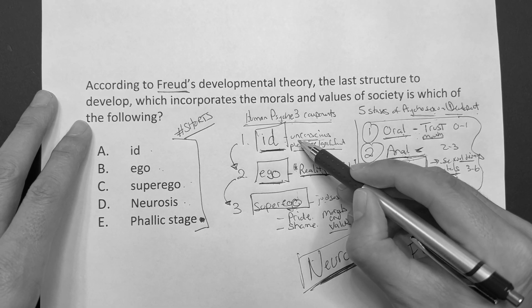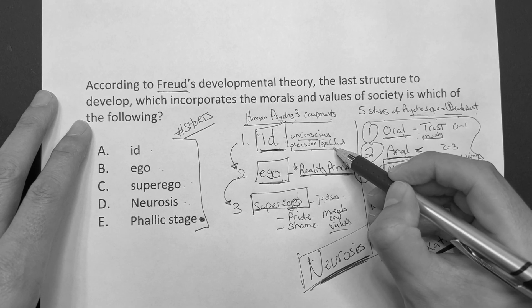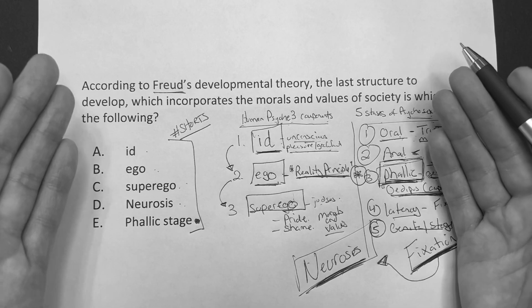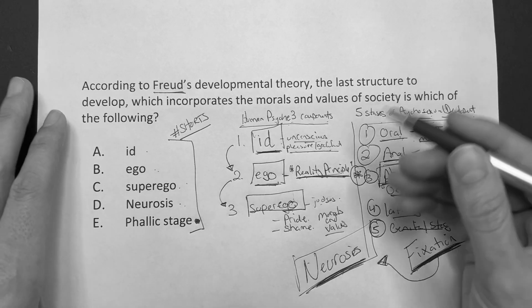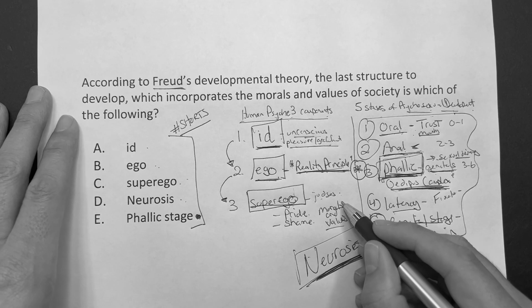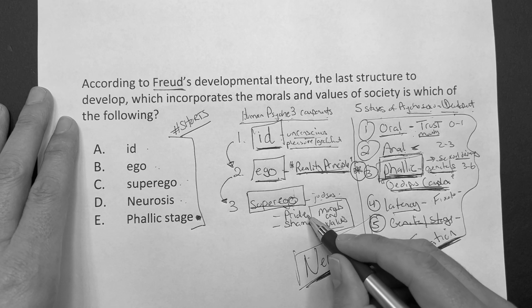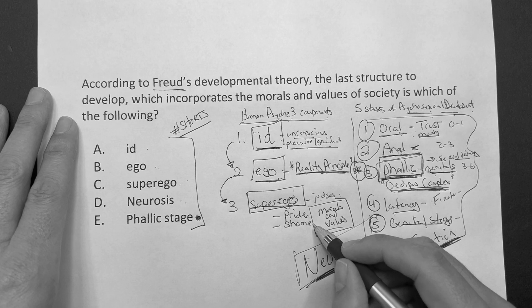The id, which is your unconscious, seeks pleasure. The ego, which operates on the reality principle, meaning okay, this is more conscious choice. And then you have the superego, which incorporates morals and values of our society. And if you do good, you get pride. If you do bad, you have the shame.